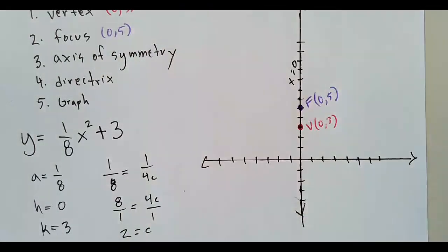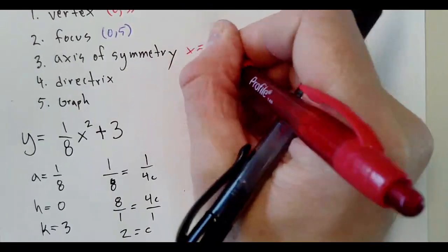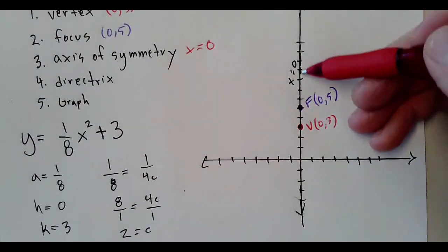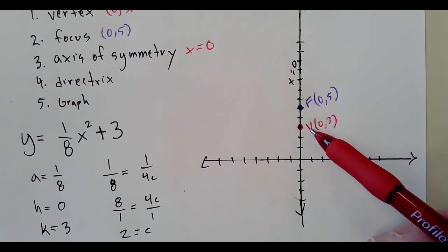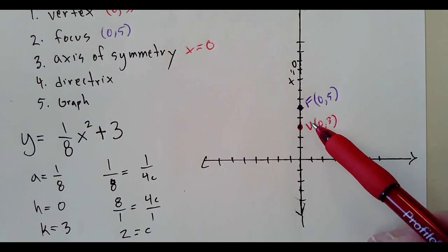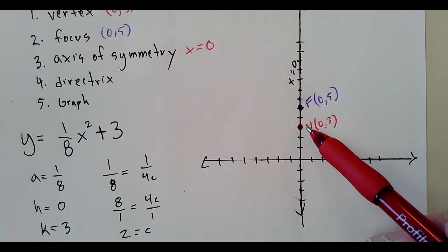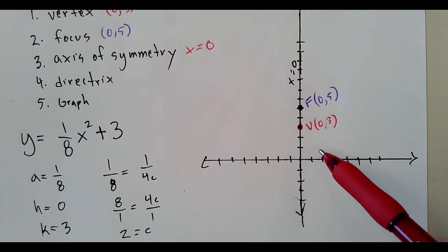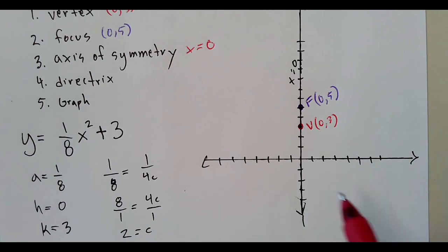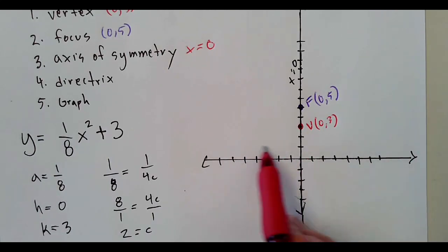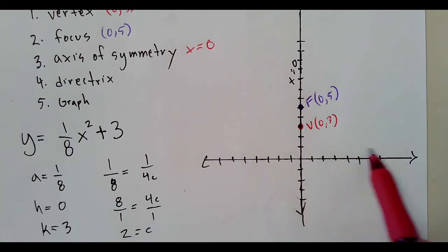Our directrix is going to be the same distance from the vertex to the focus—sorry, the same distance that the focus is from the vertex, except in the other direction. So the directrix is going to be right there at y equals one.